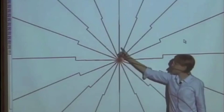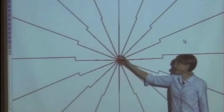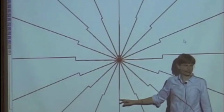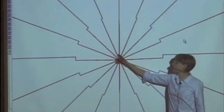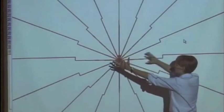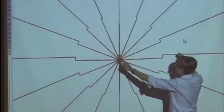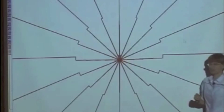But if we're in line with the acceleration of this charge, we actually don't see a kink at all. The field just always points in the same direction. So this pulse of radiation seems to spread out in directions perpendicular to the acceleration.